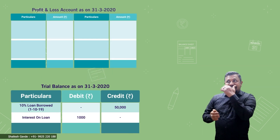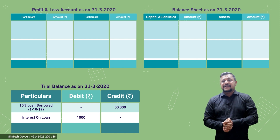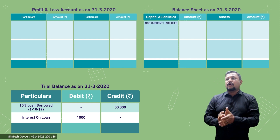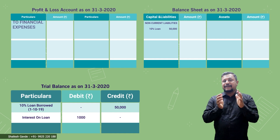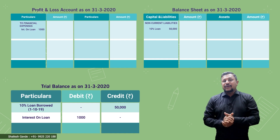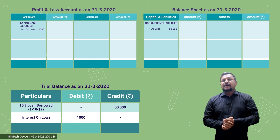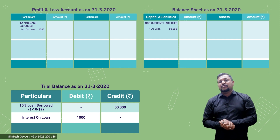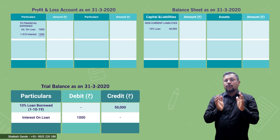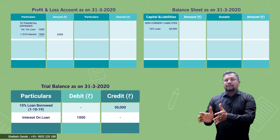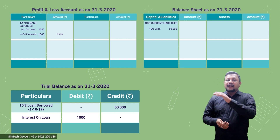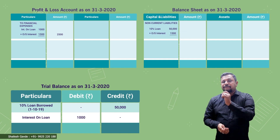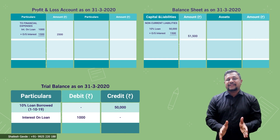Now let us understand the effects of this adjustment in the profit and loss account and balance sheet. The trial balance item '10 percent loan borrowed' will be posted in the balance sheet under non-current liabilities (inner column): 50,000. 'Interest on loan' from trial balance goes to the P&L debit side (inner column): 1,000. For the outstanding interest, we add 1,500 to interest on loan in P&L debit side, making the outer column total 2,500. The second effect: add 1,500 to the loan on the liability side of the balance sheet, showing an outer column total of 51,500.